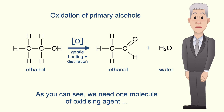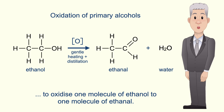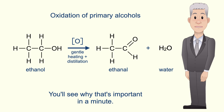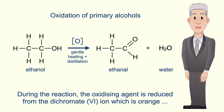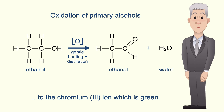We need one molecule of oxidizing agent to oxidize one molecule of ethanol to one molecule of ethanal. During the reaction, the oxidizing agent is reduced from the dichromate(VI) ion, which is orange, to the chromium(III) ion, which is green.